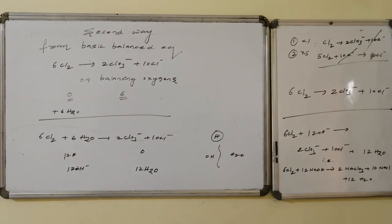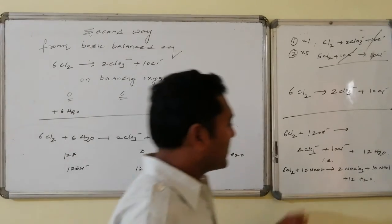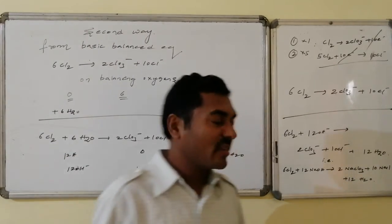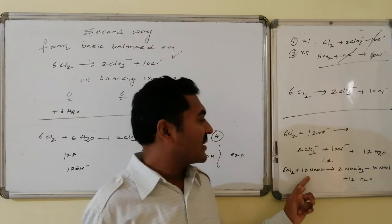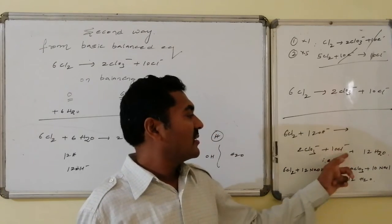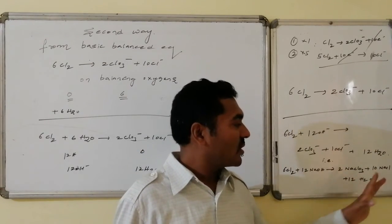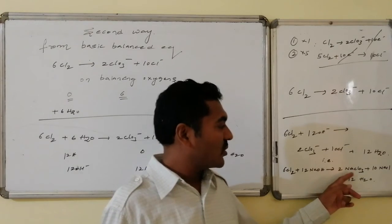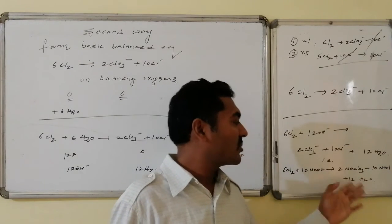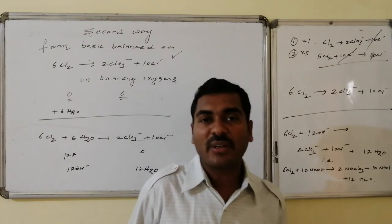The molecular form of the equation, considering sodium hydroxide where sodium is the spectator ion, is: 6Cl₂ + 12NaOH → 2NaClO₃ + 10NaCl + 6H₂O. This completes the balancing of the chlorine reaction with base.